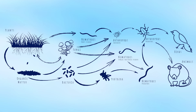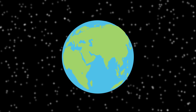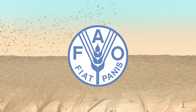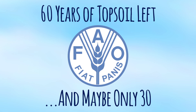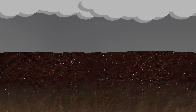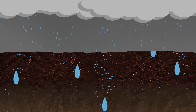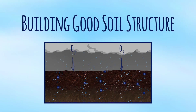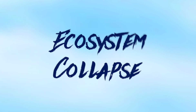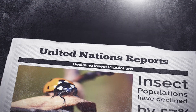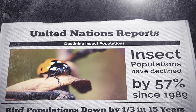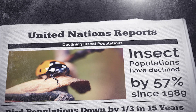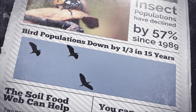For the environment, there are also many benefits. Humanity is facing existential threats related to the soil. The most obvious is soil erosion — the United Nations Food and Agriculture Organization has estimated we only have around 60 years left before all the world's topsoil is depleted, with some estimates as low as 30 years. The soil food web prevents soil erosion by both wind and water by building soil structure. Another existential threat is ecosystem collapse — the UN has stated that insect populations have been decimated by around 25 percent each decade for the last 30 years, meaning 57 percent fewer insects today than in 1989. Bird populations have declined by one-third in the last 15 years in parts of Europe.